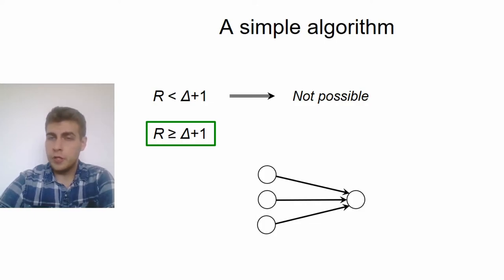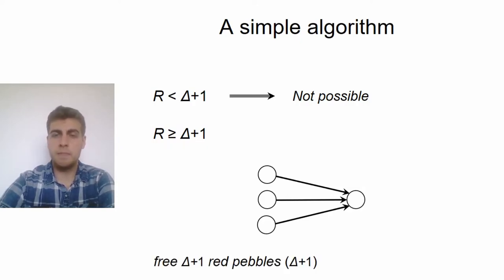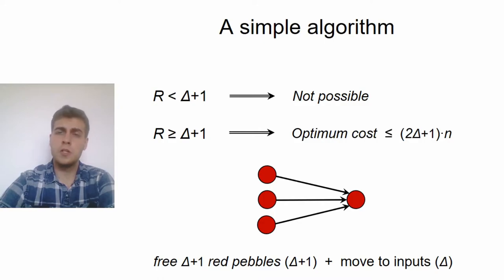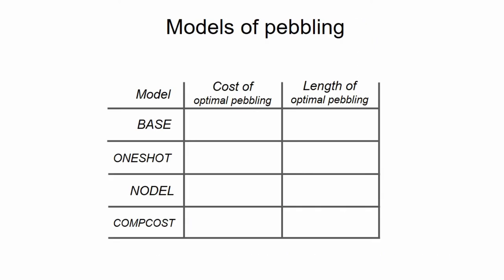You can just take a topological ordering of the nodes of the DAG as a computation order. And in the next step, you can always just free delta plus 1 arbitrary red pebbles by sending those values into slow memory. Then you can move delta of these red pebbles to the inputs and do the computation. And since this has a cost of 2 delta plus 1 altogether, this also shows that the optimal cost of a pebbling can never be more than 2 delta plus 1 times n. This already gives us an upper bound on the cost of pebbling in each of these models, and note that this is slightly higher in the comCost model due to the extra cost of computations.